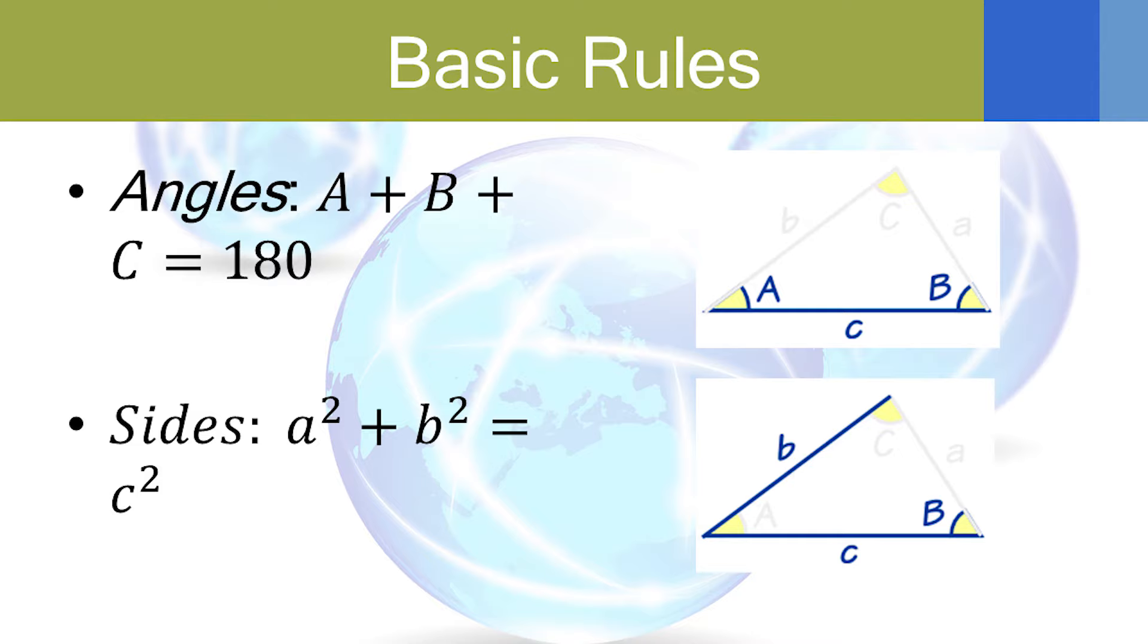Pythagorean theorem. A squared plus B squared equals C squared. If I've got a hypotenuse and I have an adjacent angle, I would say A squared plus adjacent side equals our hypotenuse side. Do a little algebra and find A. Pretty simple.